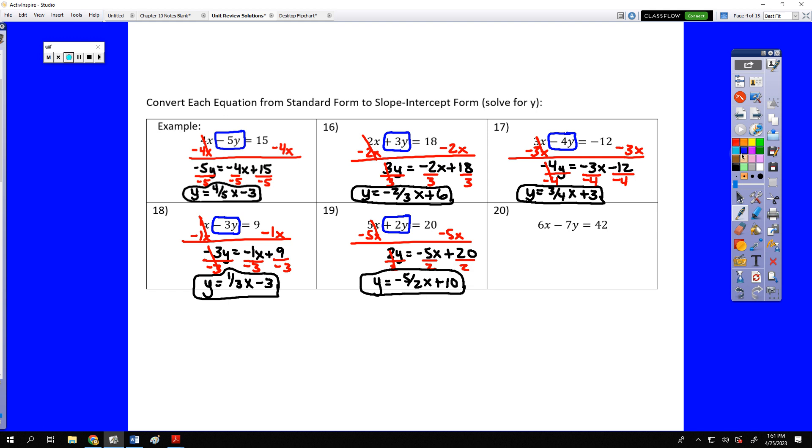On to the last one of this section. Again, that 7y is what we're trying to save. We're going to move the 6x to the other side of the equation, giving us negative 7y equals negative 6x plus 42. And we're going to divide by negative 7. That would give us y equals positive 6 over 7x minus 6.